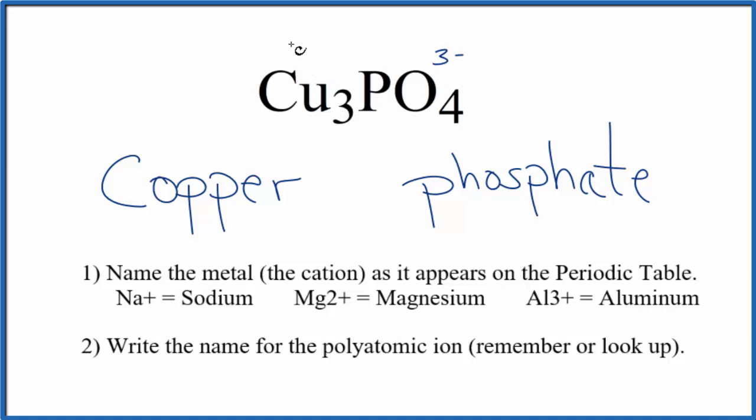we have to have a 1 plus for each copper. Three copper atoms, and each one is 1 plus. 3 times 1 plus, that'll give us 3 plus, so the 3 plus and 3 minus balance out to a net charge of 0.